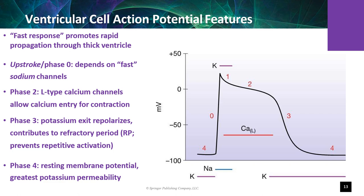Phase 3 is membrane repolarization: calcium channels close, slow potassium channels remain open, and potassium leaving the cell returns the membrane potential toward baseline. Fast sodium channel gates progressively reset. The sodium-potassium pump and calcium transporters reestablish ion gradients, and the cell membrane returns to resting membrane potential, which is Phase 4. In Phase 4, the resting membrane potential is at minus 90 millivolts, with potassium leak channels open and all other channels closed.